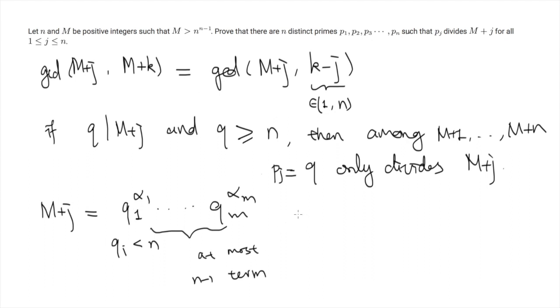So by the Pigeonhole principle, one of these terms must be larger than n. So we can find one Qj such that Qj to the power alpha j is larger than n. So one of these terms Qj to the power alpha j is larger than n. And this will be the prime factor we are going to assign to M plus J. And the remaining part is to prove that these Qj are indeed distinct from each other.